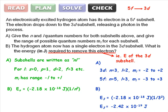Our answer is negative because we calculated the energy of the subshell, not the energy required to remove an electron from that subshell. Simply reverse the sign, and we're done.